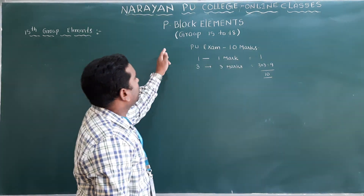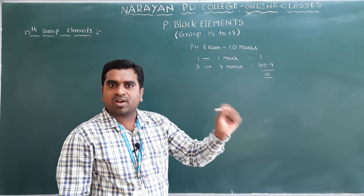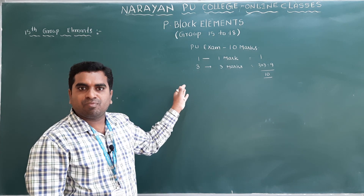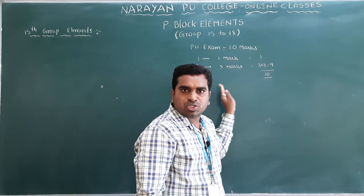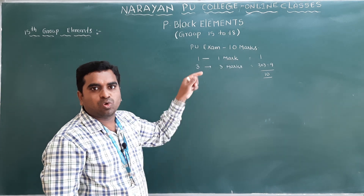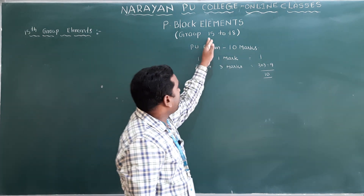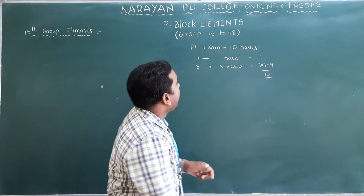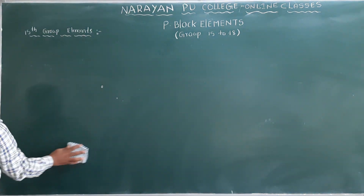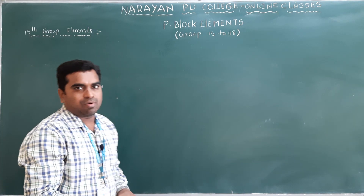We will discuss groups 15 to 18. S-block elements groups 1 and 2 you have already studied in first year. P-block elements start from the 13th group and end at the 18th group. You have studied the 13th and 14th groups - the boron family and carbon family - in first year. From now we will start from the 15th to 18th groups, beginning first with the 15th group elements.